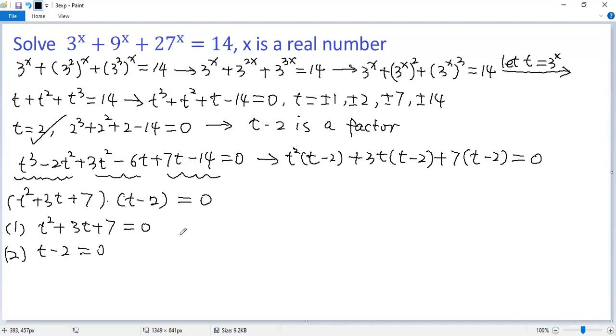For the first case, the quadratic equation doesn't have real solutions because the discriminant delta equals b squared minus 4ac, 3 squared minus 4 times 1 times 7, 9 minus 28 equals negative 19, less than 0. So no real solution.